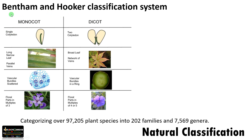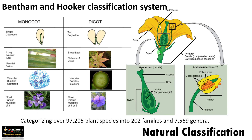In this system, classification is based on cotyledon — monocots and dicots. Leaf structure is considered, anatomy is also considered, and floral characteristics are also considered. Maximum number of morphological and anatomical characters are considered. Such a system is called natural classification.